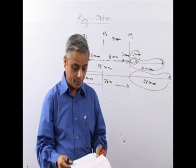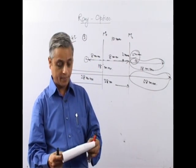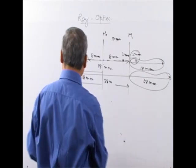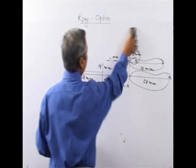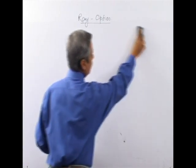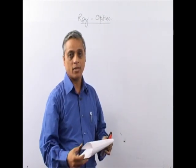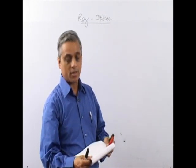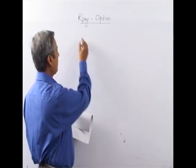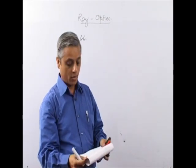Question number 44: One cannot see through fog because fog consists of tiny water droplets suspended in air. When light falls on these droplets, it is scattered in all possible directions and cannot be focused on the retina. The answer is B.